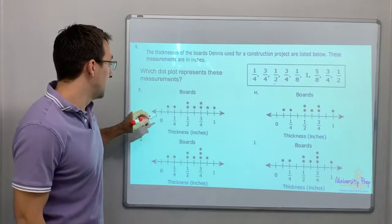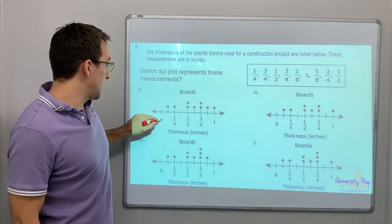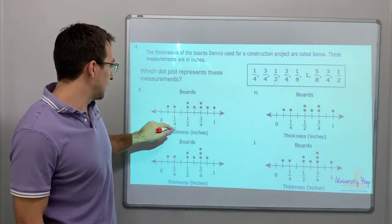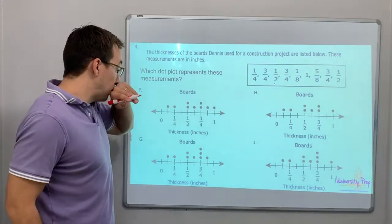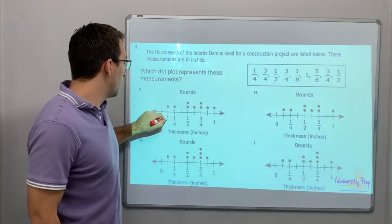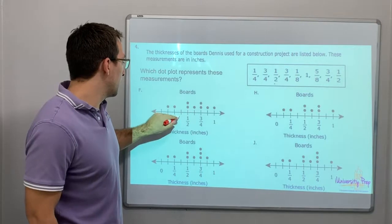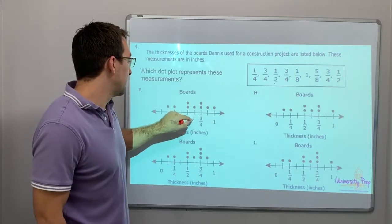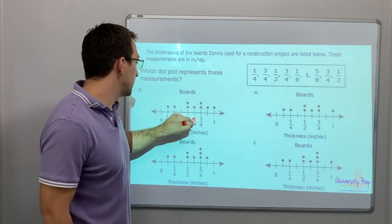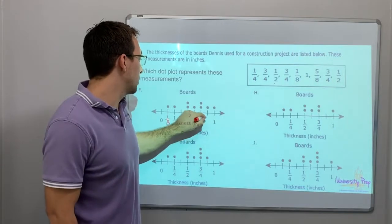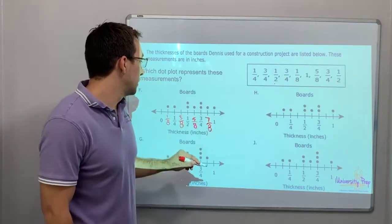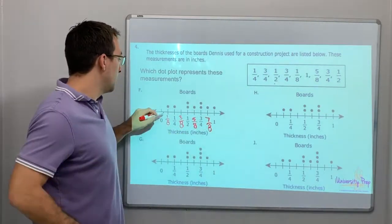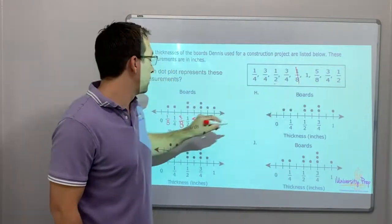Watch how I do this. The scale goes: zero, one-eighth, one-quarter, three-eighths, one-half, five-eighths, three-quarters, seven-eighths. I'll fill in each measurement: one-eighth — there's one dot. One-quarter — check. Three-eighths — no dot there. One-half — there are two dots. I'm filling in each dot and marking it off as I go.